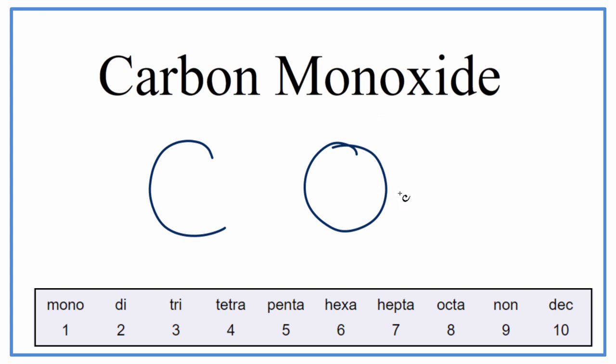So we don't have to do anything there. It's kind of strange, though. We have mono in front of the oxide, but we never write mono in front of the first element here. So we don't say monocarbon monoxide. We say carbon monoxide.